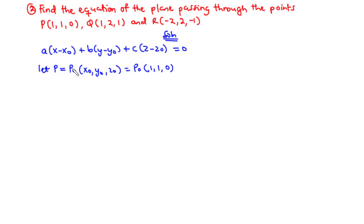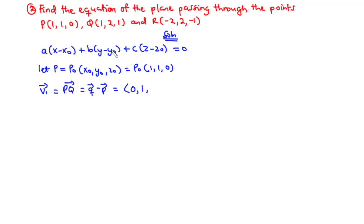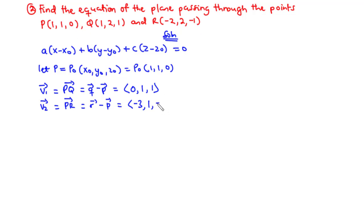Let's find the two vectors which lie on the plane. We have these two vectors as V1 and V2. V1 is the vector P0Q, given by Q minus P. In component form, we have 1 minus 1 which is 0, 2 minus 1 which is 1, and 1 minus 0 which is 1. For V2, we have the vector PR, given by R minus P: negative 2 minus 1 which is negative 3, 2 minus 1 which is 1, and negative 1 minus 0 which is negative 1.